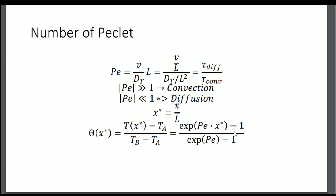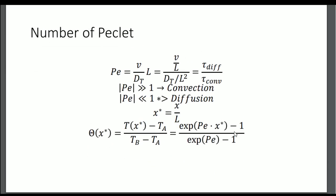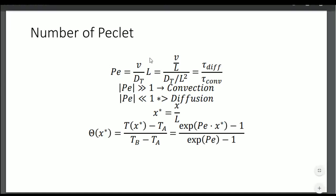Now we discuss the Péclet number — a dimensionless variable equal to v times L over dt, where L is the characteristic length of the flow (e.g., the length of a pipe). Multiplying and dividing by L, v over L gives a characteristic time of convection, and dt over L squared gives a time of diffusivity. So the Péclet number represents the ratio of diffusion time to convection time.